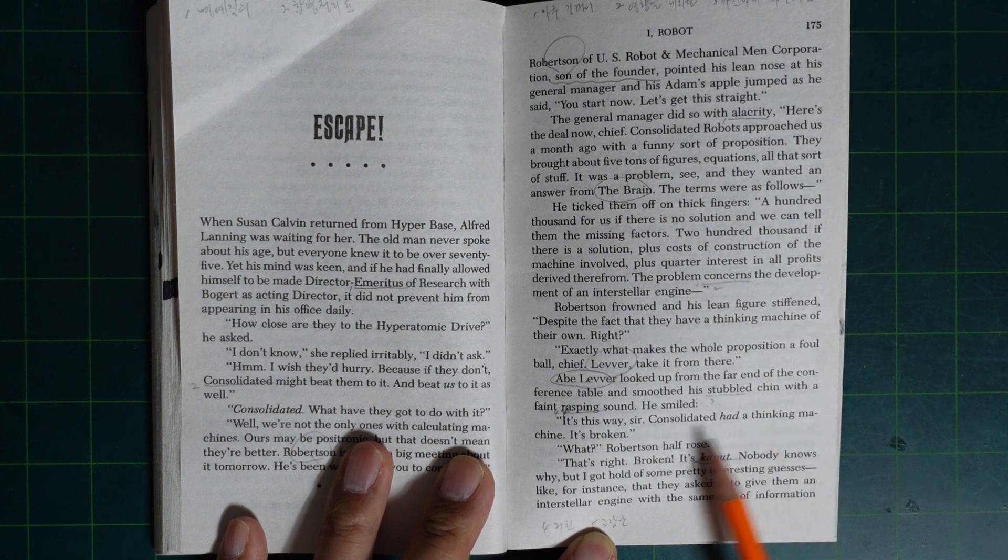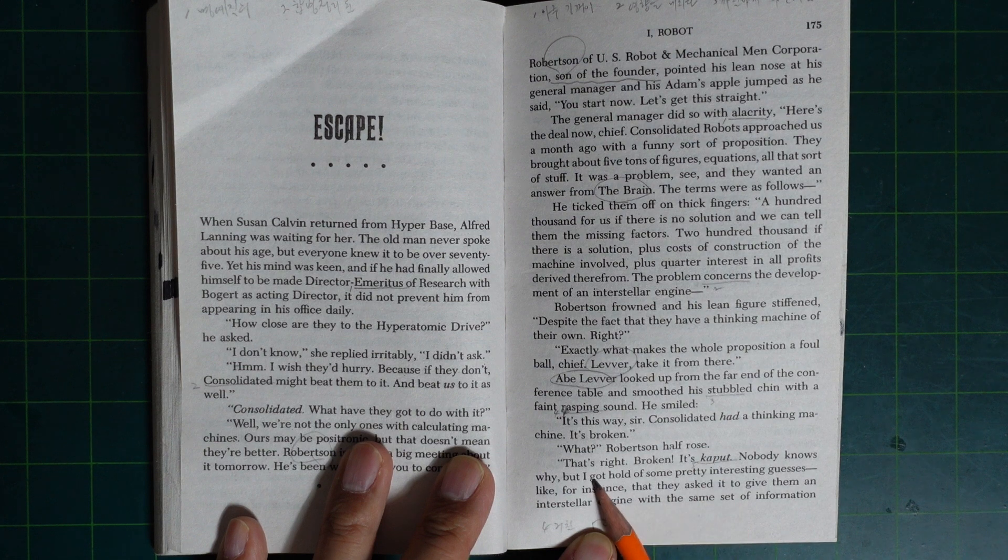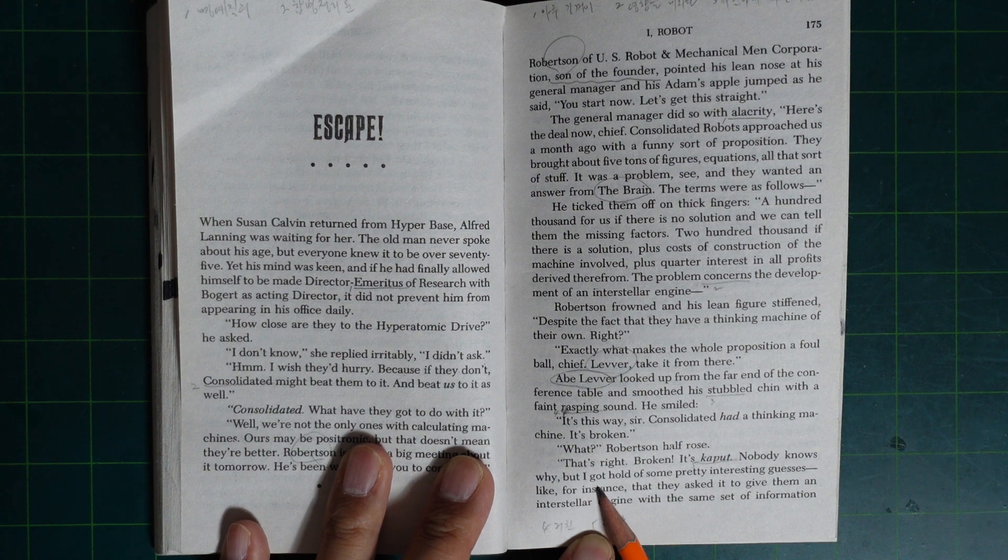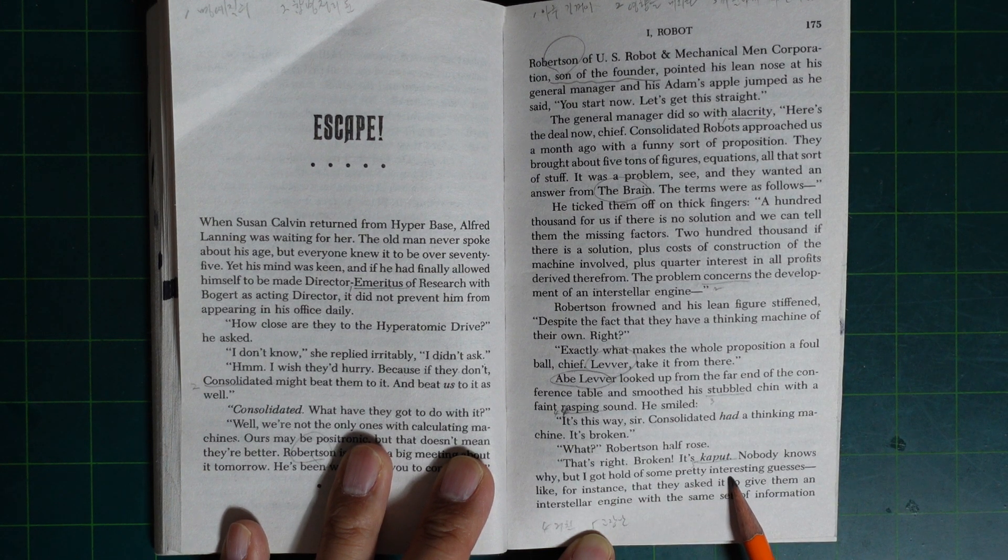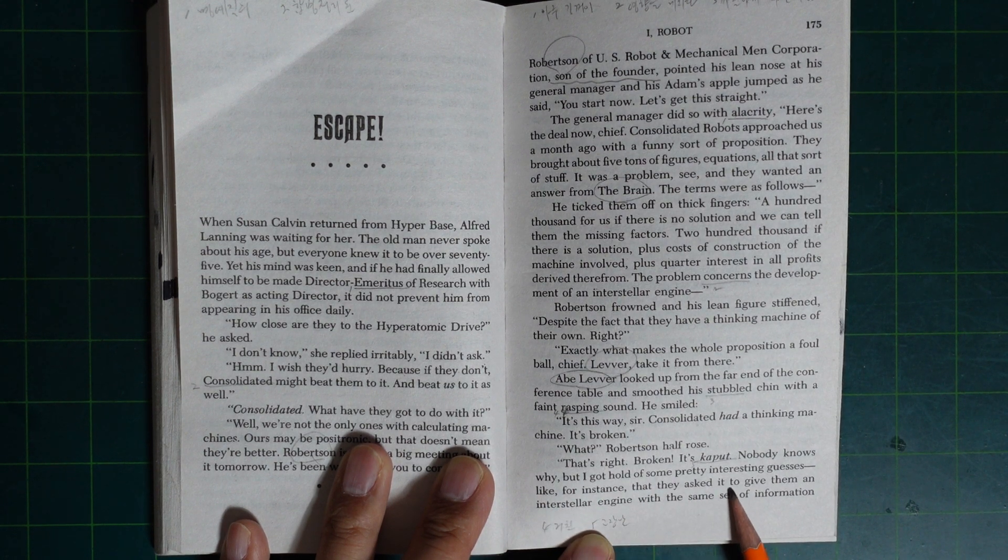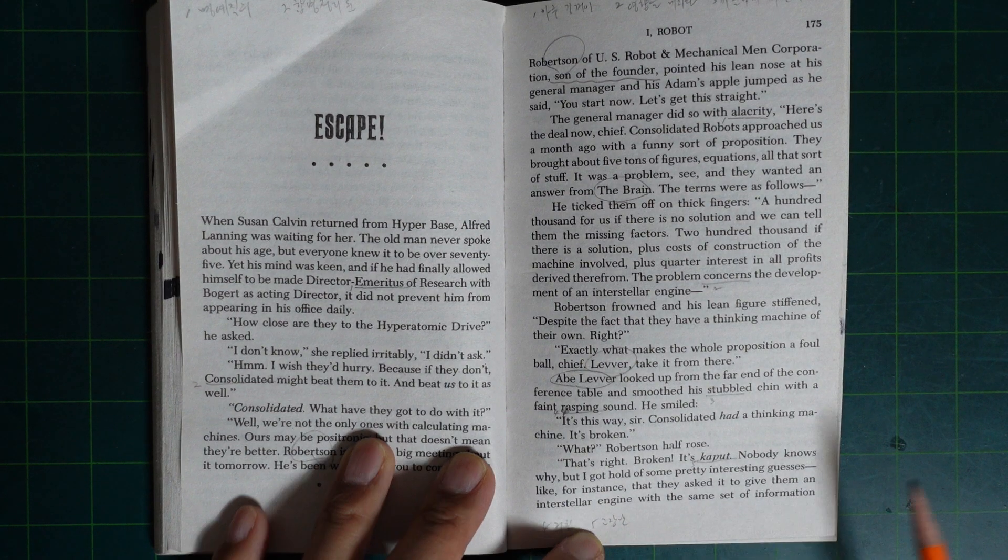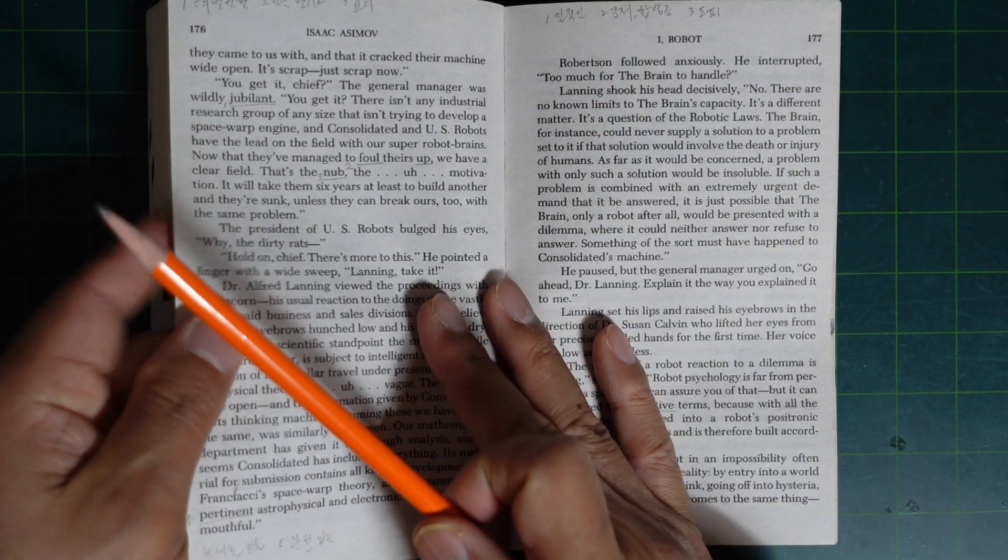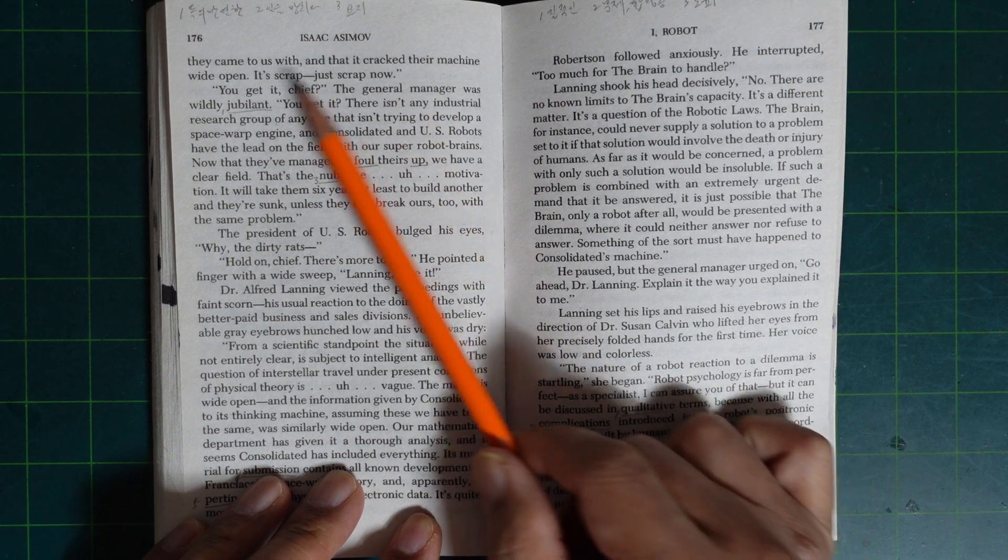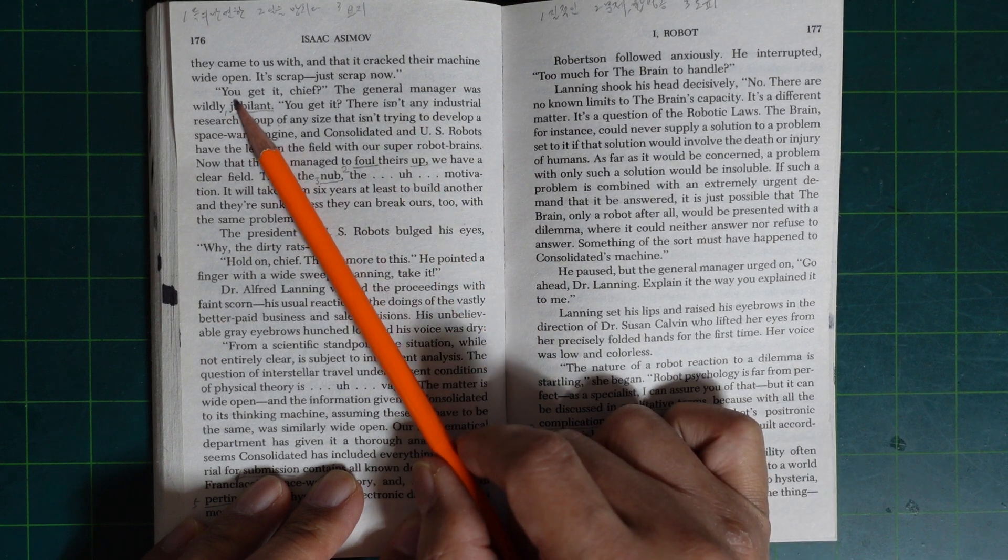Consolidated's thinking machine is broken. What? Robertson half rose. That's right. Broke. It's scrap. Nobody knows why, but I got hold of some pretty interesting guesses. Like, for instance, that they asked it to give them an interstellar engine with the same set of information they came to us with, and that it cracked their machine wide open. Scrap. Just scrap now. You get it?